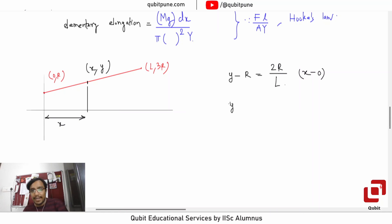So how much is Y? Y is equal to R plus 2Rx by L. Raise your hand if you understand this. And that is actually our radius. That is actually our radius. So what should be plugged in here? That's Y.